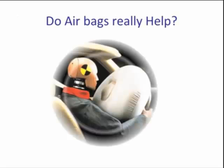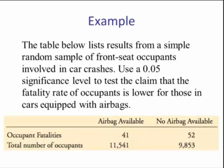Let's do an example: Do airbags really help? The table below lists results from a simple random sample of front seat occupants involved in car crashes. Use a 0.05 significance level to test the claim that the fatality rate of occupants is lower for those in cars equipped with airbags. So we have our alpha level. The claim is we want to see if it's lower, so this is going to be a left tail test. And here we have our summarized data. This is how many people died out of this many who had airbags, and then this is how many that died out of this number 9,853 that had no airbags. And we want to see is there a significant difference between these two proportions.